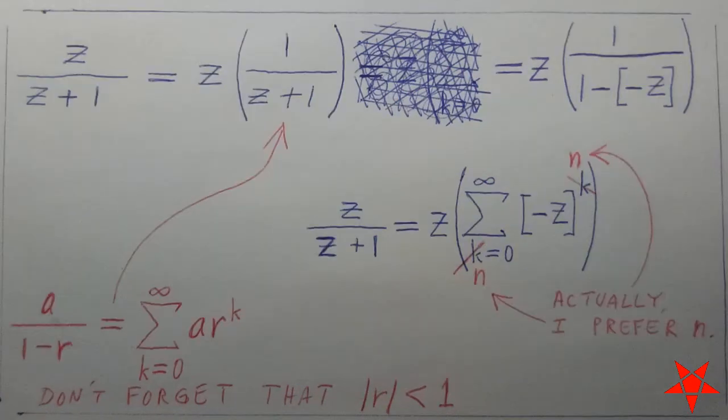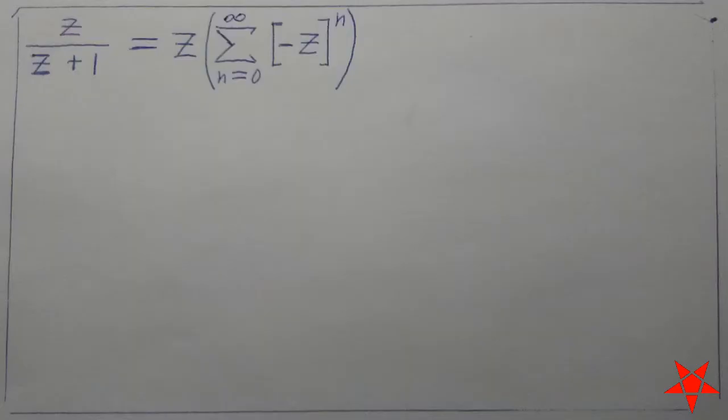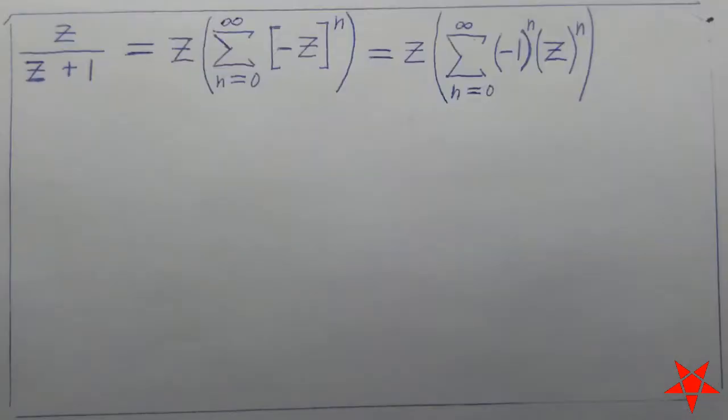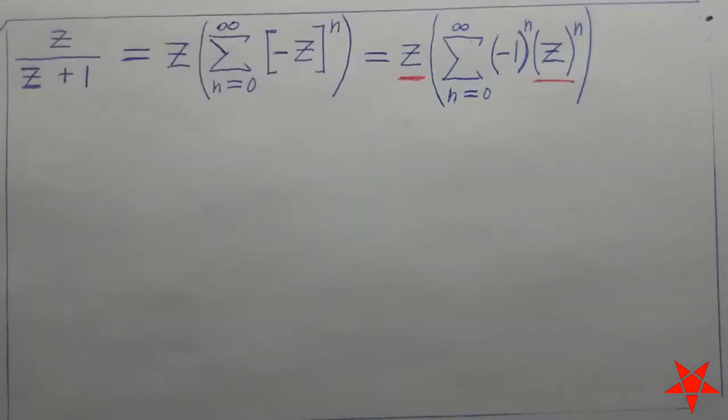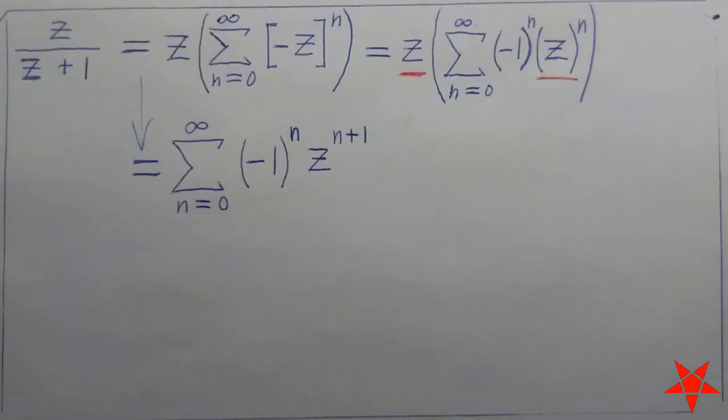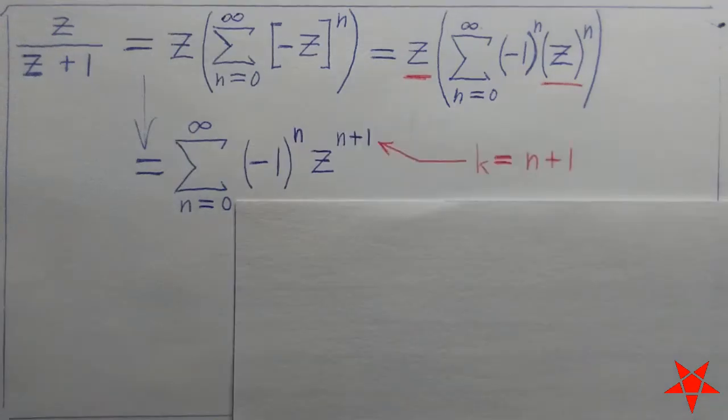We are now left with the same geometric series multiplied by z. If we factor in the extra term for z, then we now have a summation in terms of powers of z.